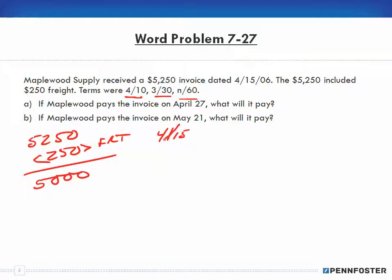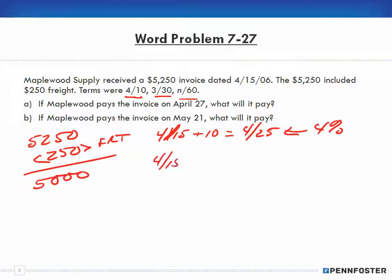The invoice is dated April 15th. We're able to take 4% within 10 days, so adding 10 days gives us April 25th — that's the deadline to take the 4% discount. If we don't pay within that period, we can take a 3% discount if we pay within 30 days. April 15 plus 30 days — since April has 30 days — gives us May 15th for the 3% discount deadline.